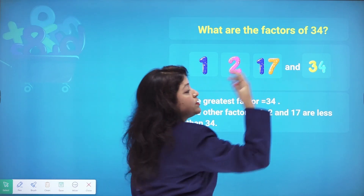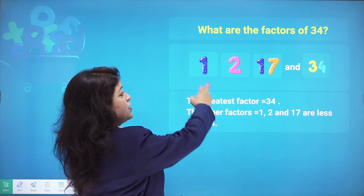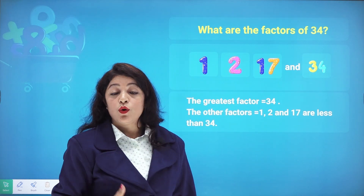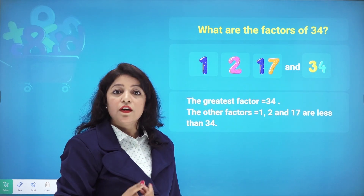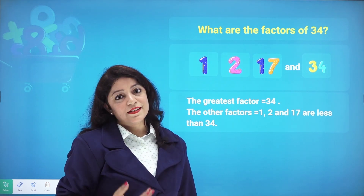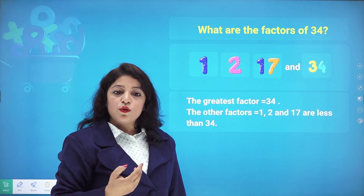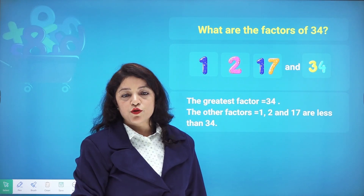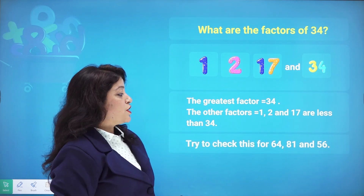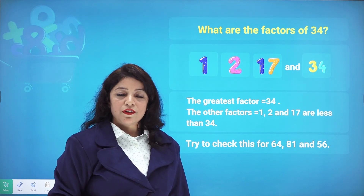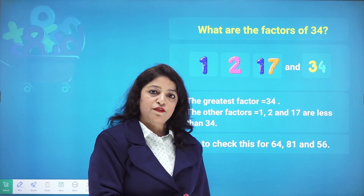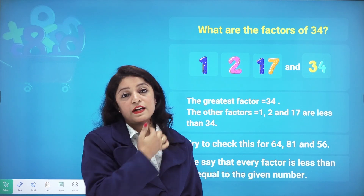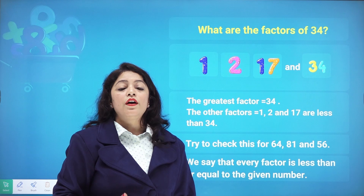The greatest factor of 34 is 34 itself, and the smallest factor is 1. The factors other than 34 — that is 1, 2, and 17 — are all less than the number itself. So every factor of a number is either equal to the number or less than it, but never greater than the number.